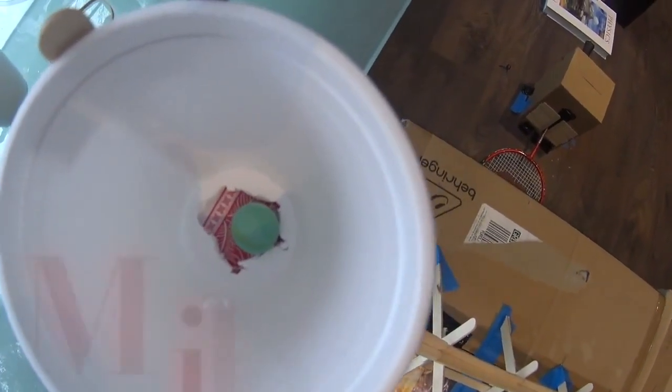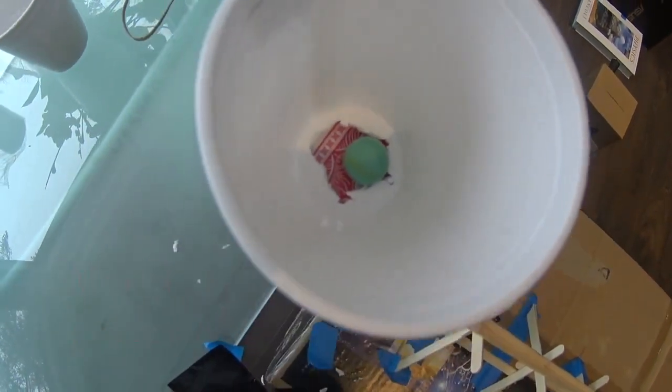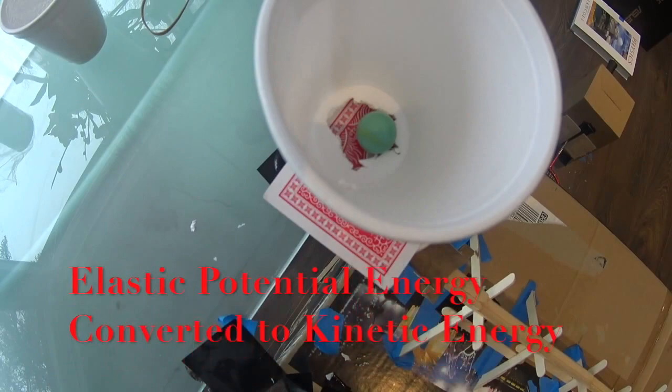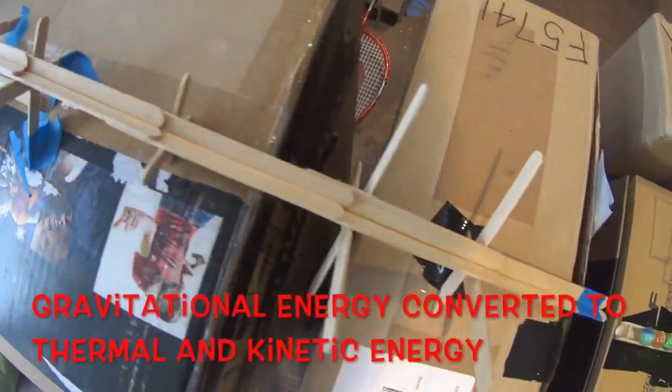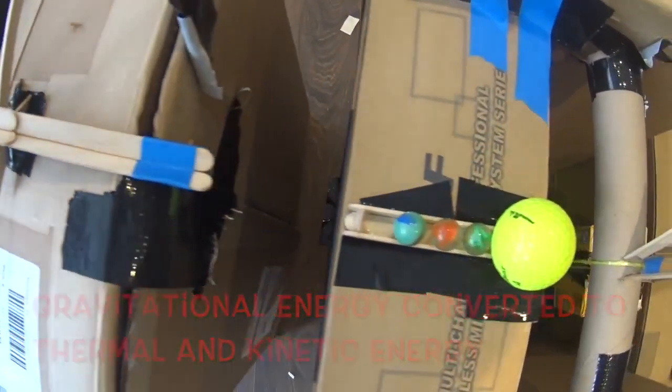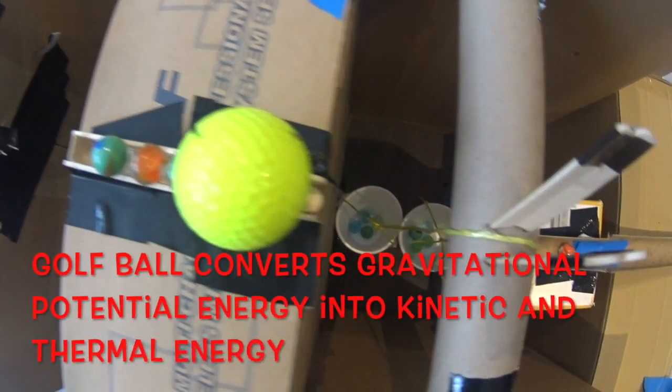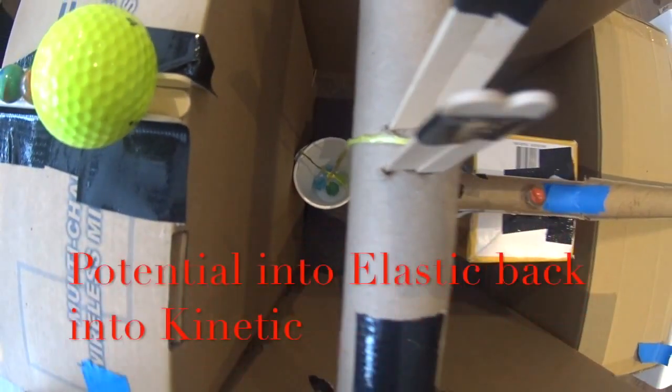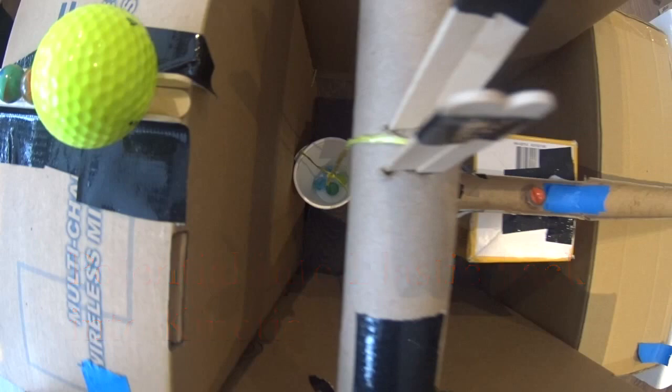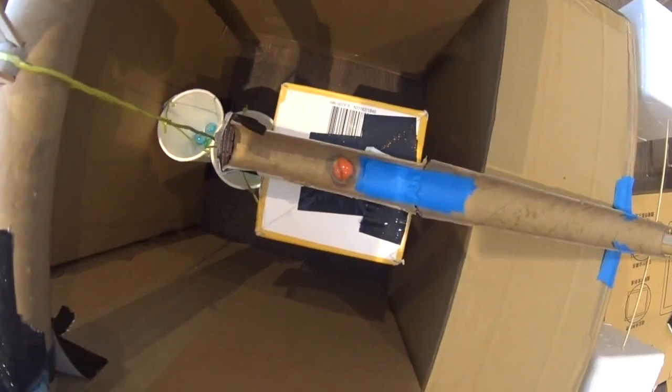As you can see, there's a marble sitting in the cup which is held by a cart. Now this cart will be removed by an elastic band, which will then cause the marble to roll down this track until it hits these series of marbles which will knock this golf ball into the cup over there.